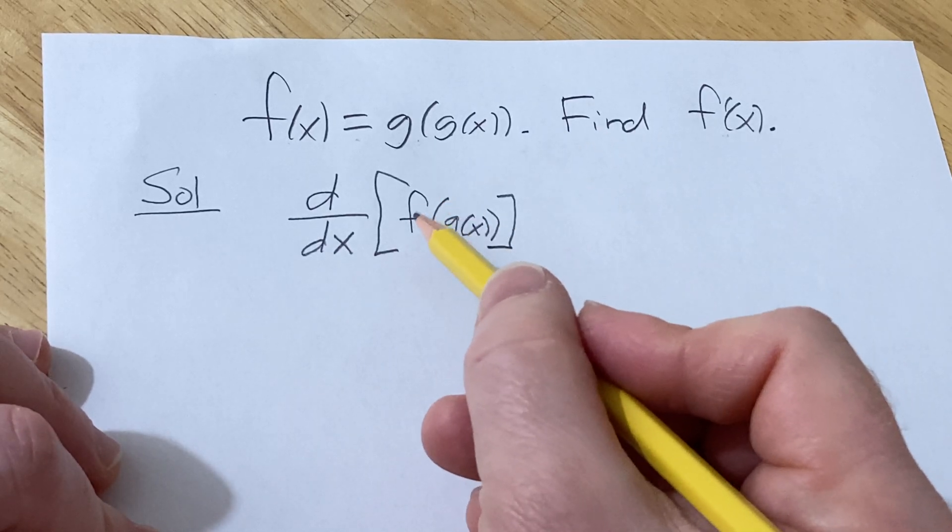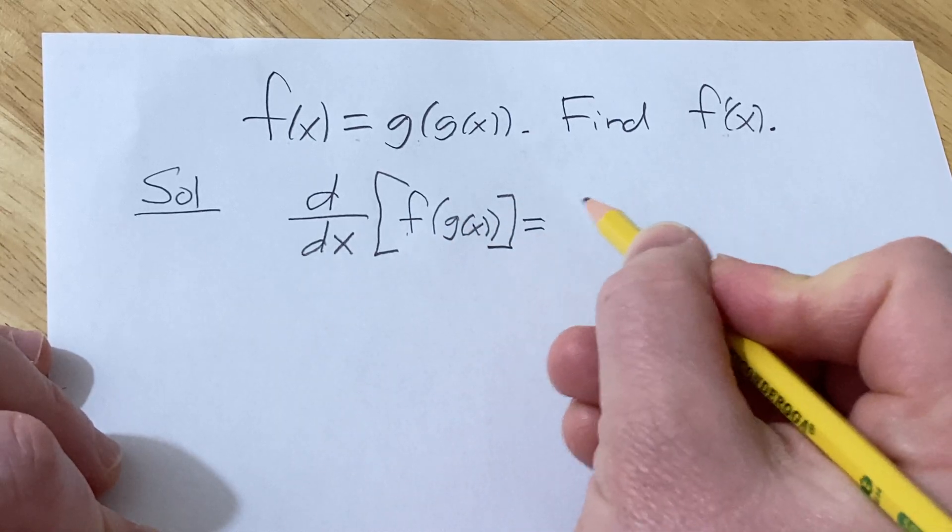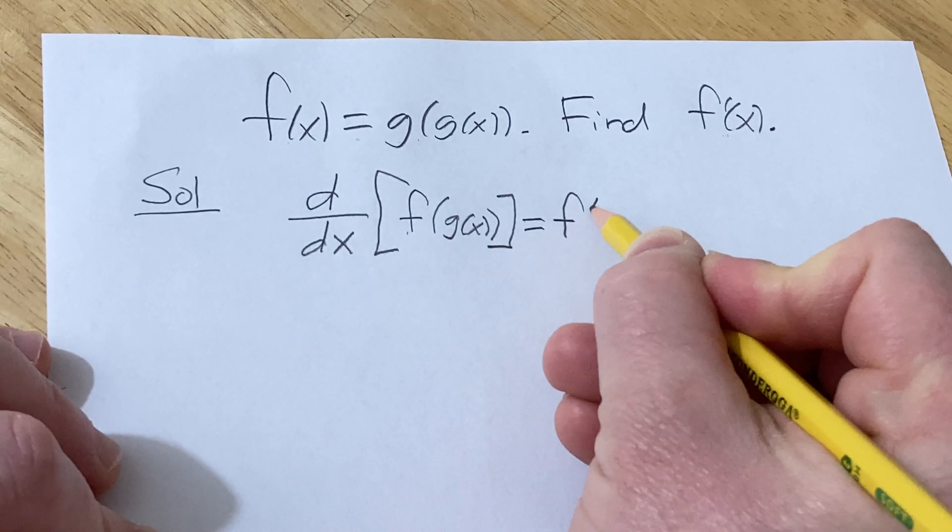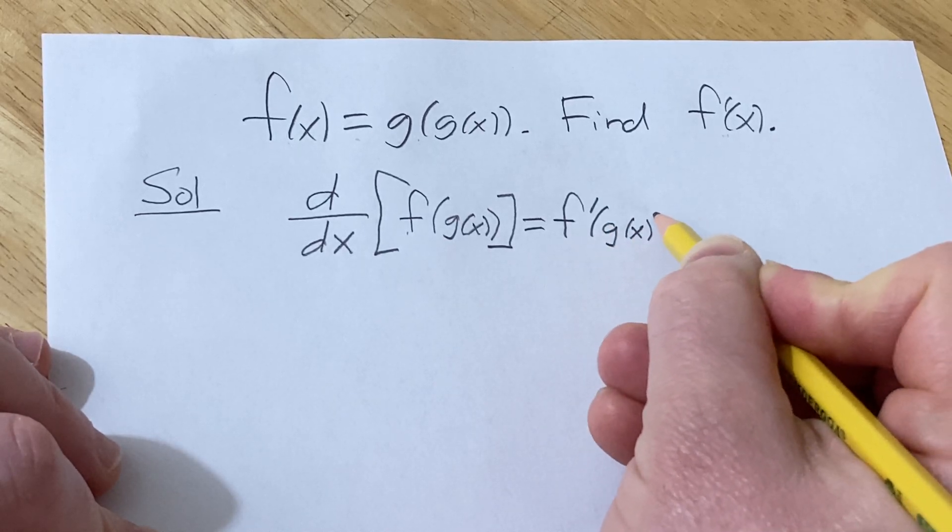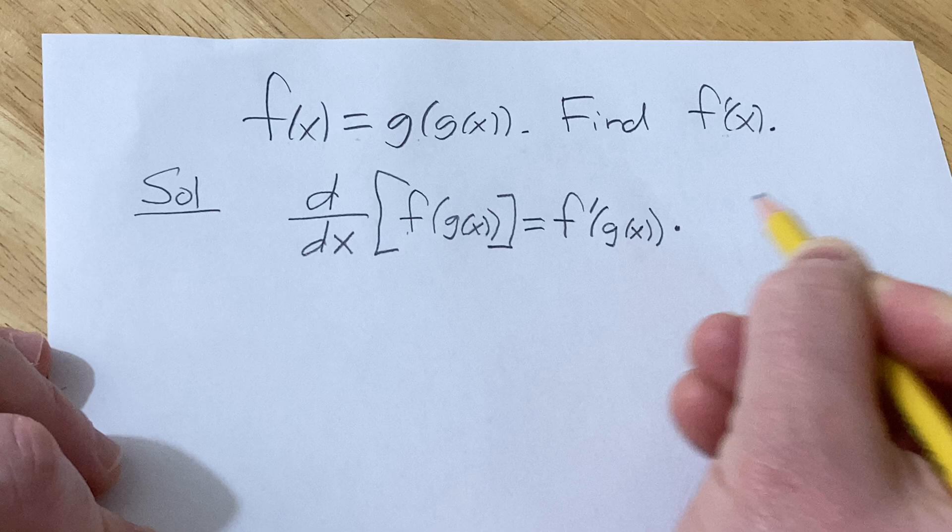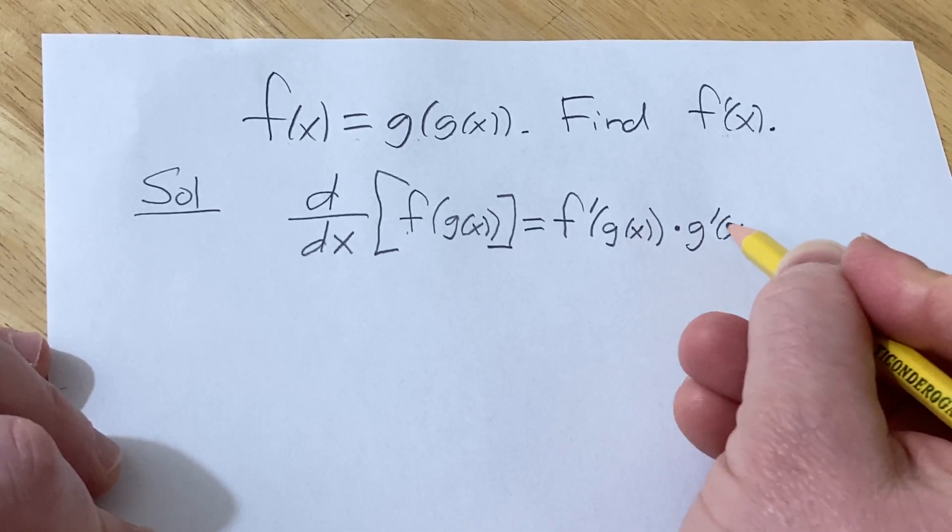You can think of f as your outside function and g as your inside function. The chain rule says you take the derivative of the outside and you evaluate it at the inside. So you leave the inside completely untouched and then multiply by the derivative of the inside. In this case that would simply be g prime of x.